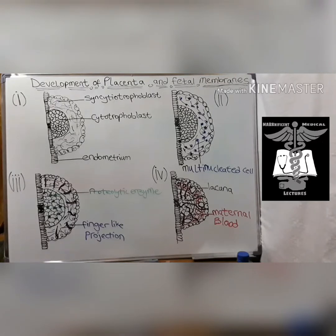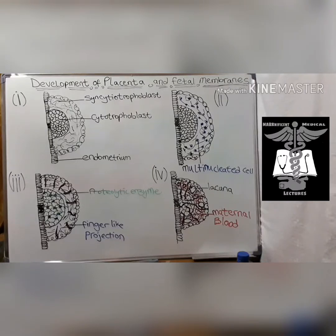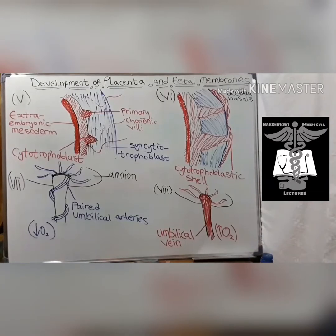Spaces begin to form within the syncytial trophoblast. The syncytial trophoblast erodes endometrial blood vessels, and lacunae, which are spaces within the syncytial trophoblast, become filled with maternal blood and glandular secretions. Isolated lacunae fuse to form a network through which maternal blood flows, establishing the early uteroplacental circulation. Projections from the cytotrophoblast begin to expand into the syncytial trophoblast.